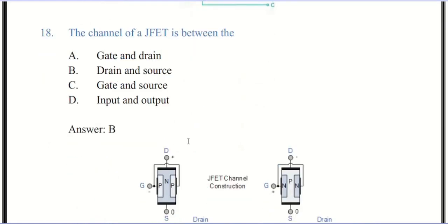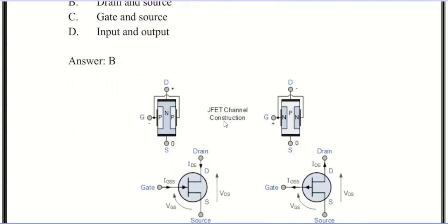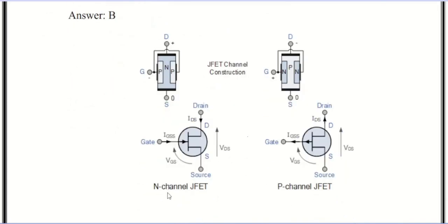Now we come to question number 18. The channel of JFET is between drain and source. The correct answer is B. You can see from the figure JFET channel, the construction and its types: N-channel JFET and P-channel JFET. There is NPN construction and PNP construction. Junction field effect transistor is a type of JFET in which the conducting channel lies between one or more PN junctions. Like all transistors, JFET has three terminals: source, drain, and gate. All JFETs are constructed with a conductive channel running from the source to the drain.